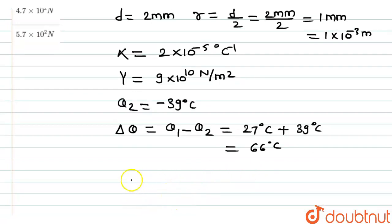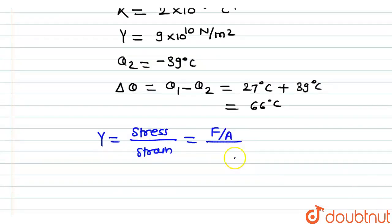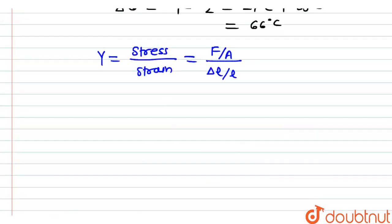Now, we know that the value of Young's modulus is calculated by the formula Y equals stress over strain. Stress equals F over A, and strain equals change in length divided by original length. The thermal strain produced del L upon L equals alpha into change in temperature.